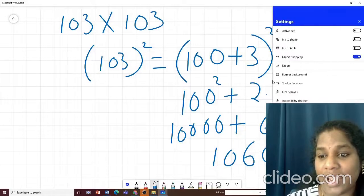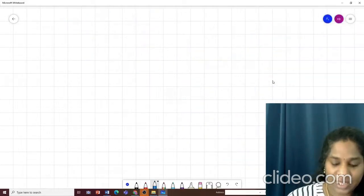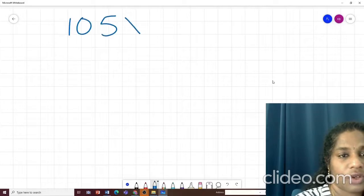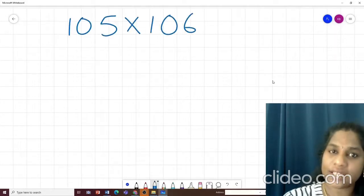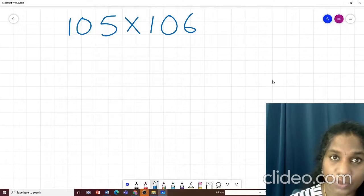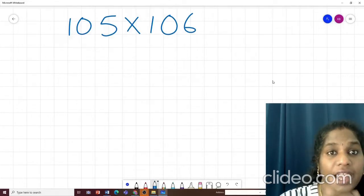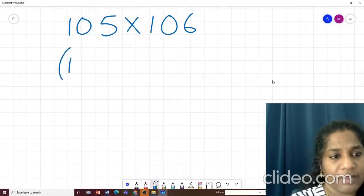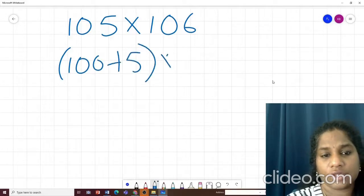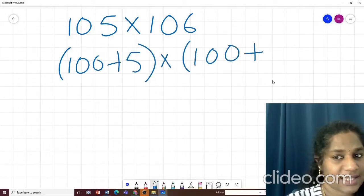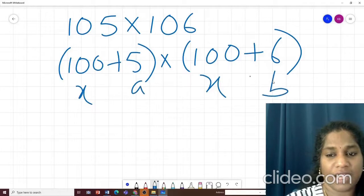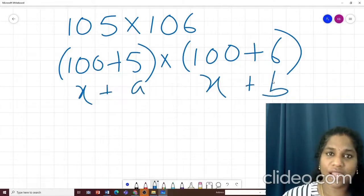Guys, if you are liking it, please go ahead and like the video. So let us go to the next question. That is 105 into 106. Which identity can come here? Think which identity can come here? Because this is 105 and this is 106. I don't think you will get A plus B and A minus B. You won't get that. What will we get? Let us see. I will get 100 plus 5 into 100 plus 6. So this is my X. This is my A and this is my B. So which formula is this? X plus A into X plus B.